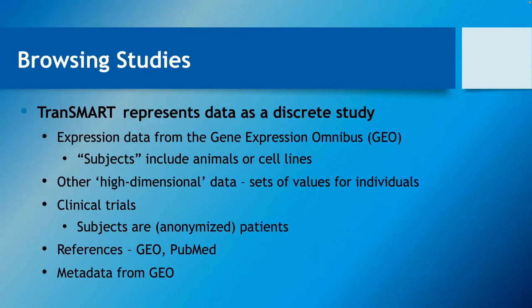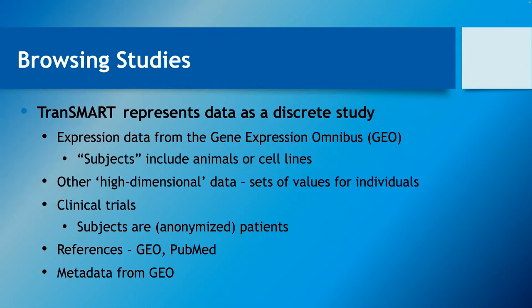In TranSMART you have discrete studies — under the study you have data arranged with demographics giving your subject data. Subjects are anonymized patients or cell lines with various treatments. You can go back to the source data from GEO — we provide links to the GEO study, links to PubMed for citations, and we load up all the metadata we can find in GEO and put that into the browse tab. In 19.1 we've extended that to have a complete set of what you can usefully get out of GEO.